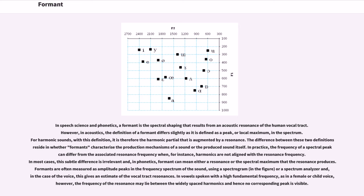In speech science and phonetics, a formant is the spectral shaping that results from an acoustic resonance of the human vocal tract.